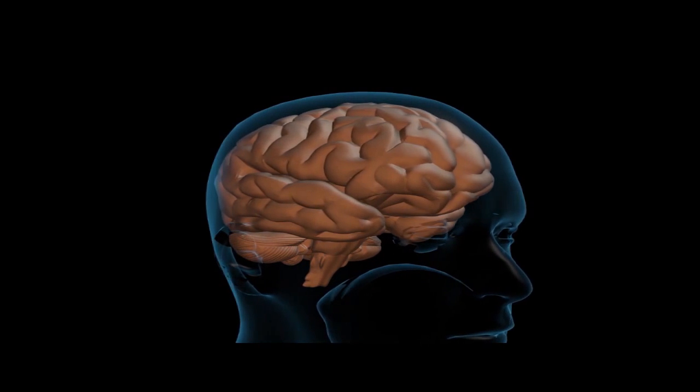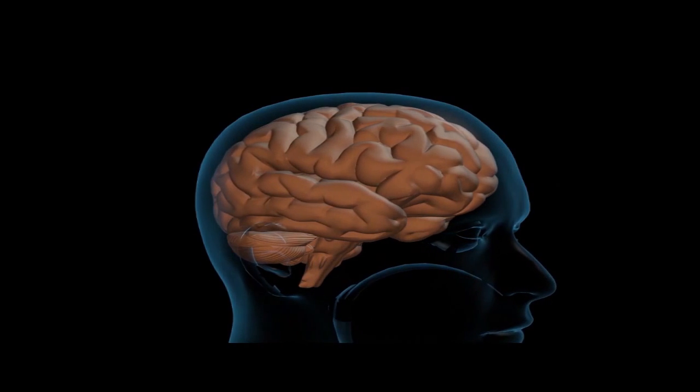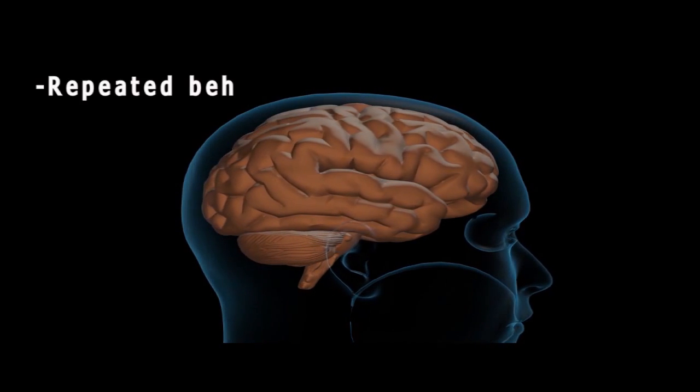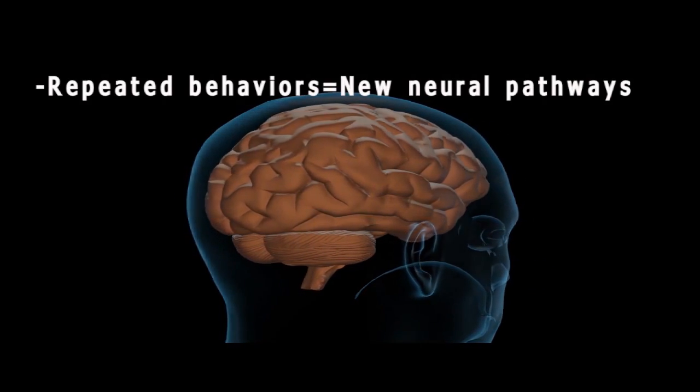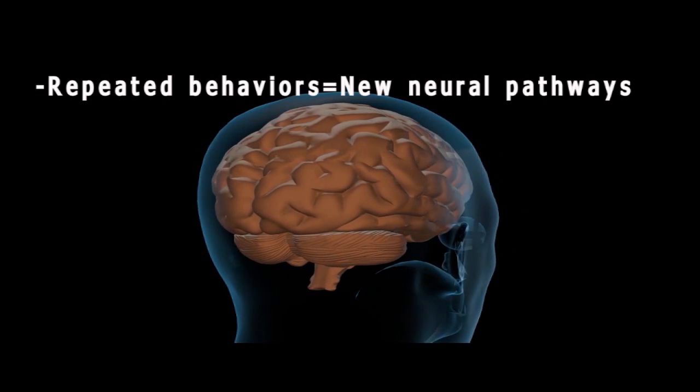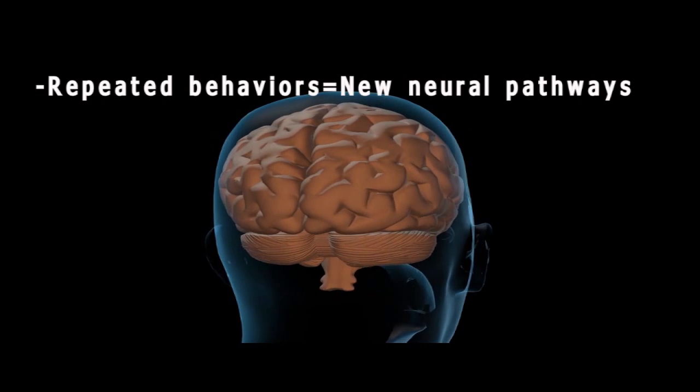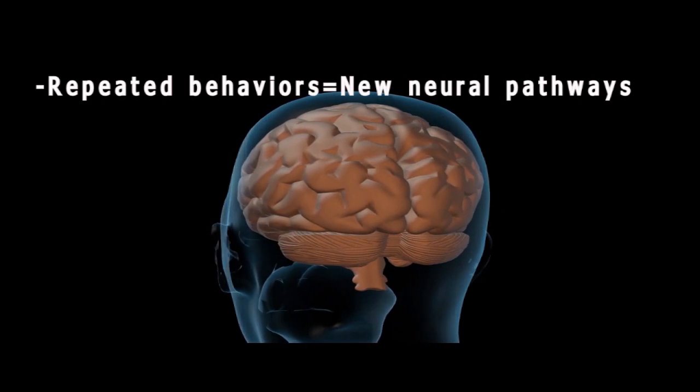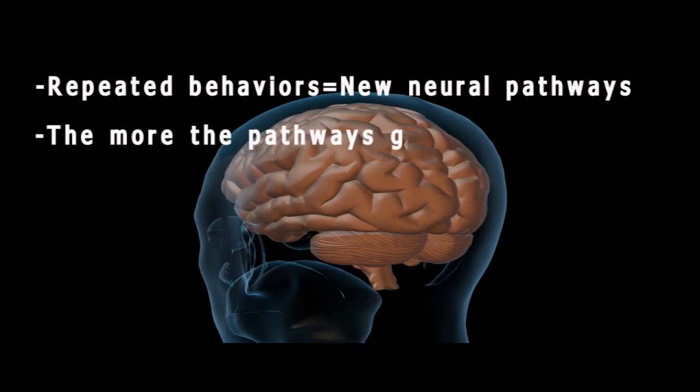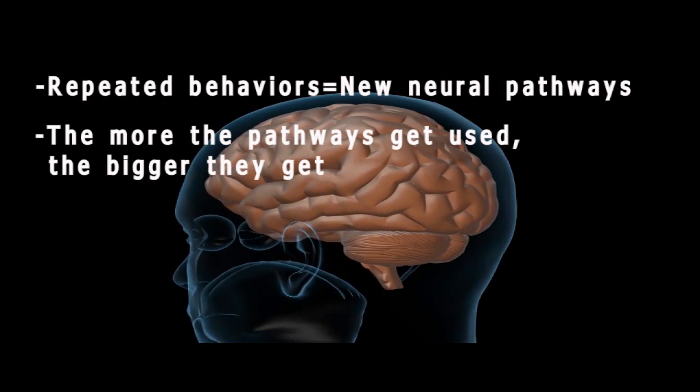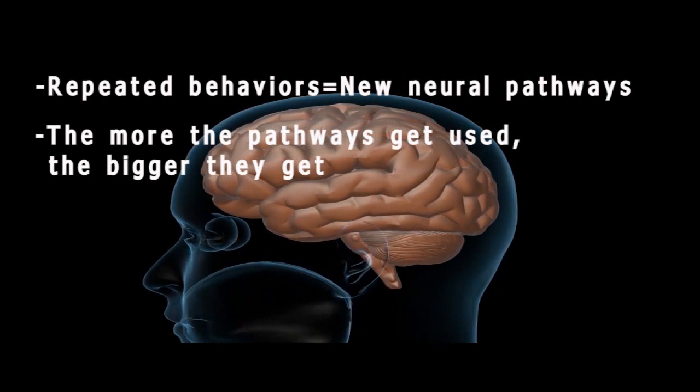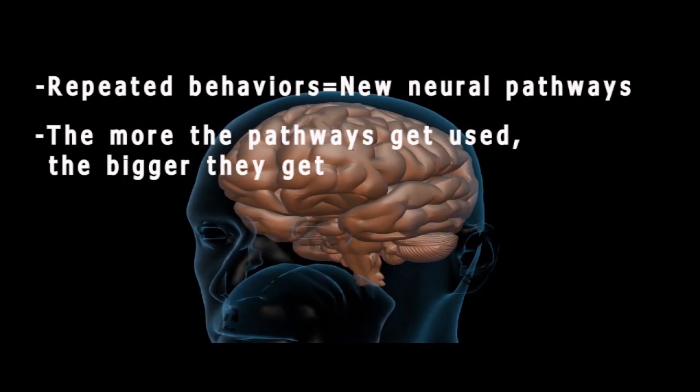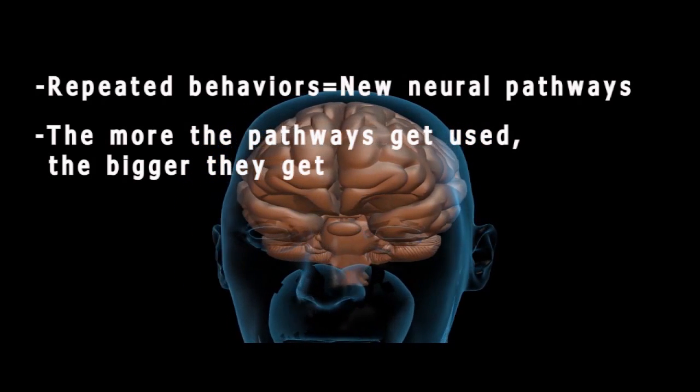Unfortunately, the changes in the brain do not end there. The second key change which occurs in the brain is that repeated behaviors, their associated feelings and thoughts, cause the brain to create new neural pathways. These are channels or paths within the brain that neural signals build up as they get used over and over again. The more these pathways get built up, the more the brain tends to use them as they become the easiest, most efficient paths neural signals can take.